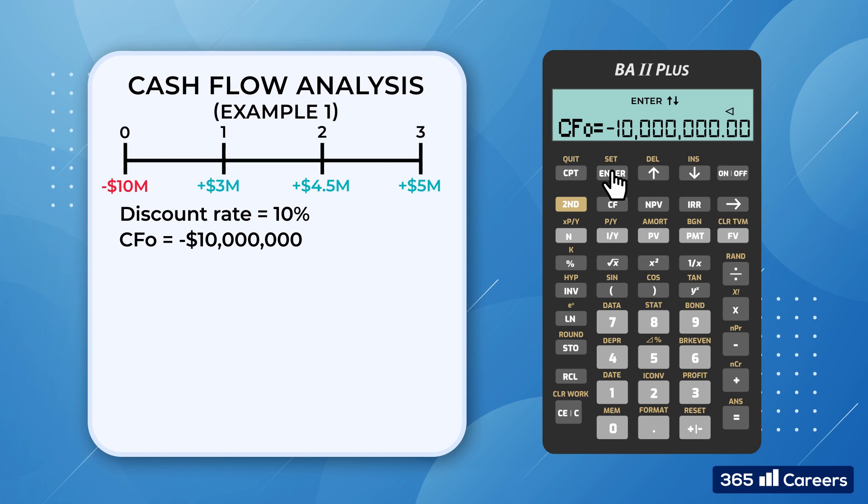We will need the rest of the cash flows. To do that, I'll press the down key. Cash flow 1 equals $3 million. Then we scroll down. What we would see next is F01, which stands for the frequency, or number of occurrences for the first cash flow. It's equal to 1, which is the calculator's default value.